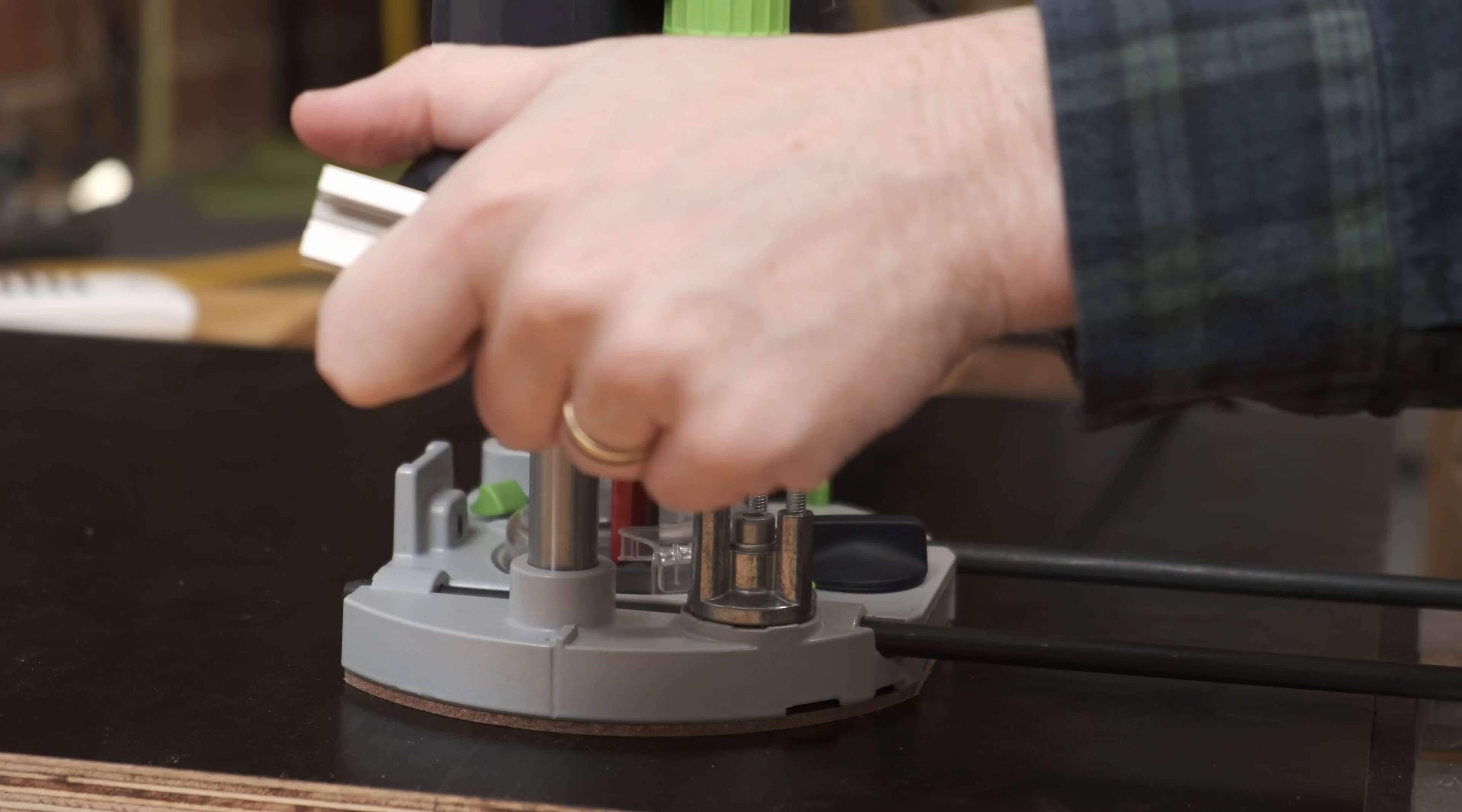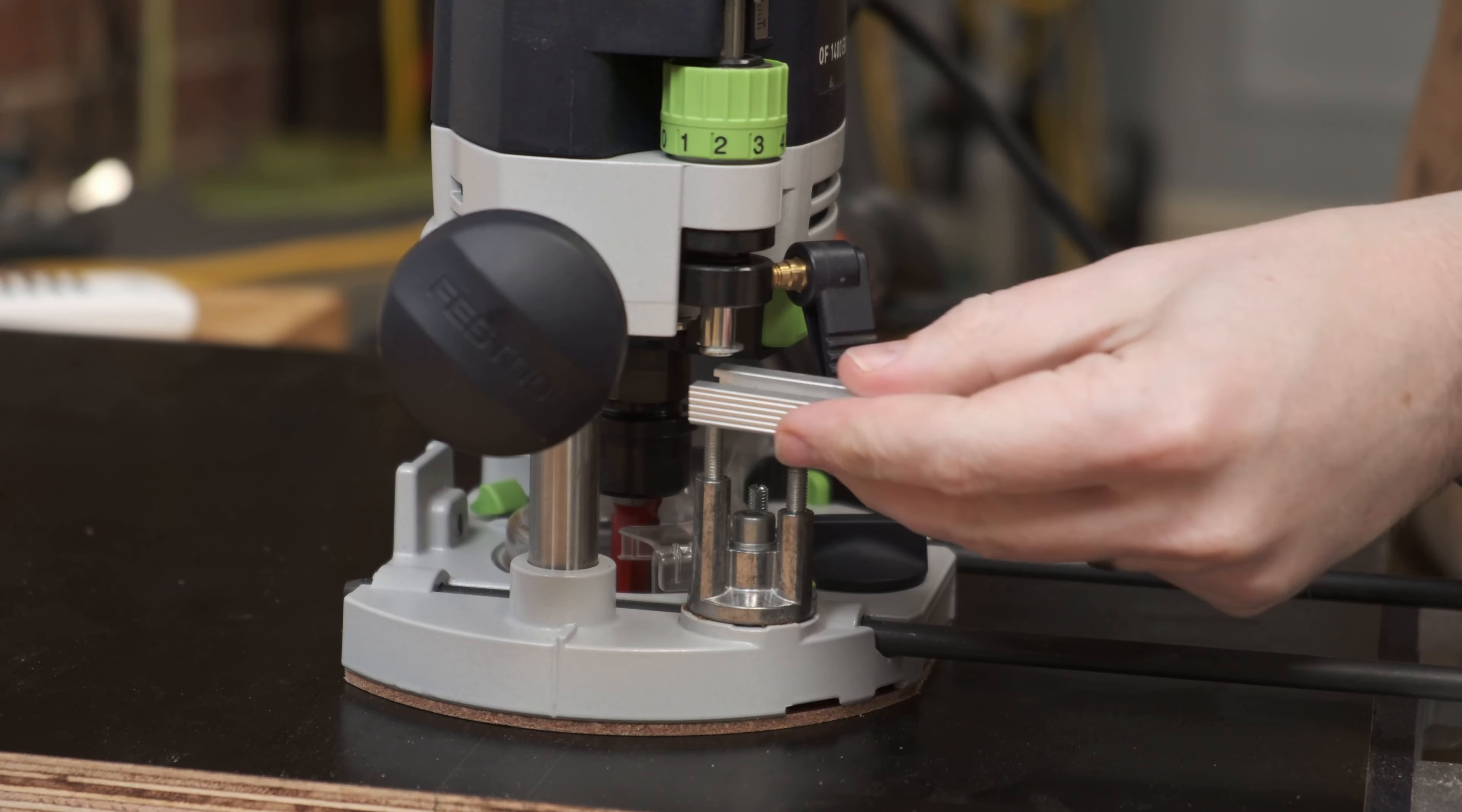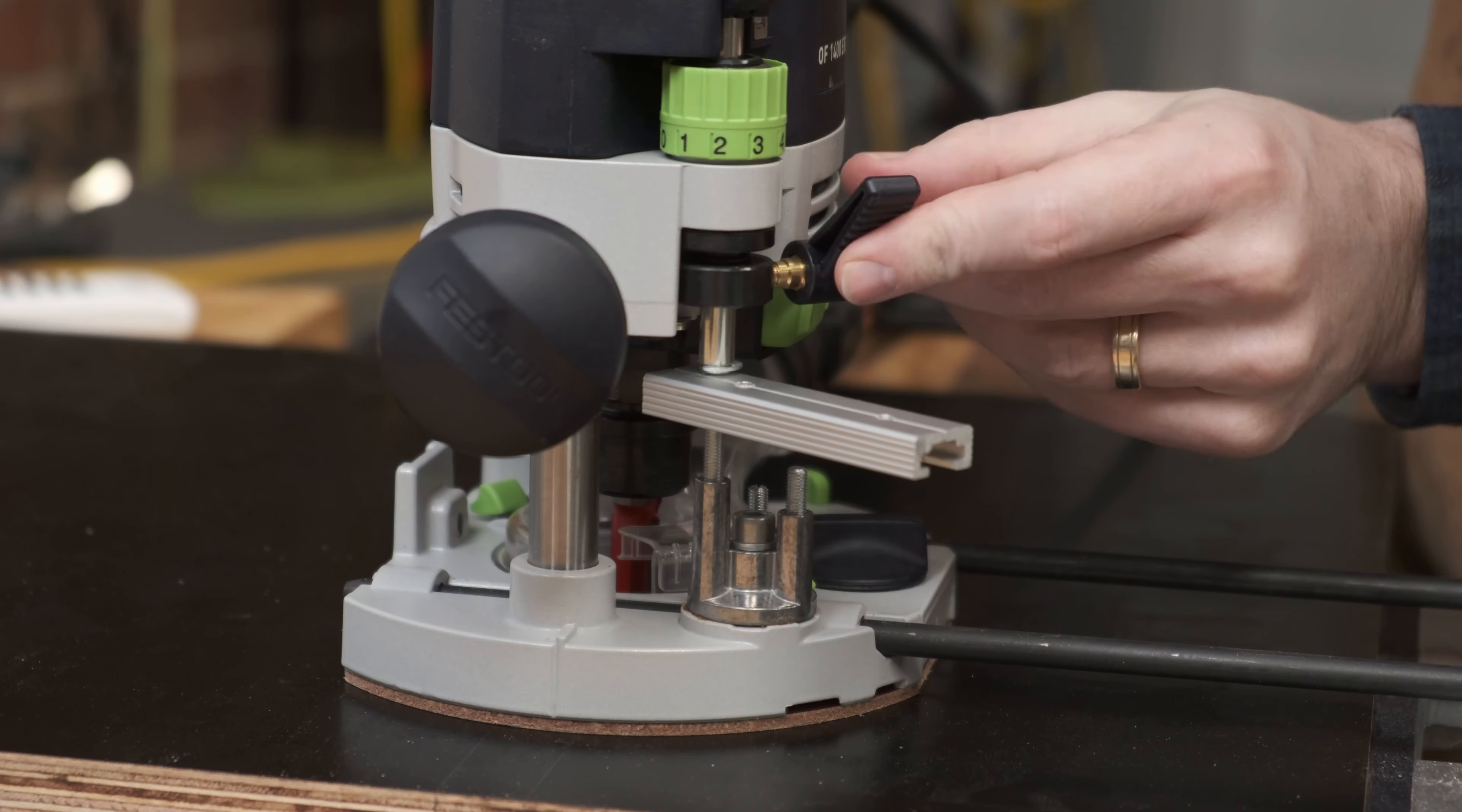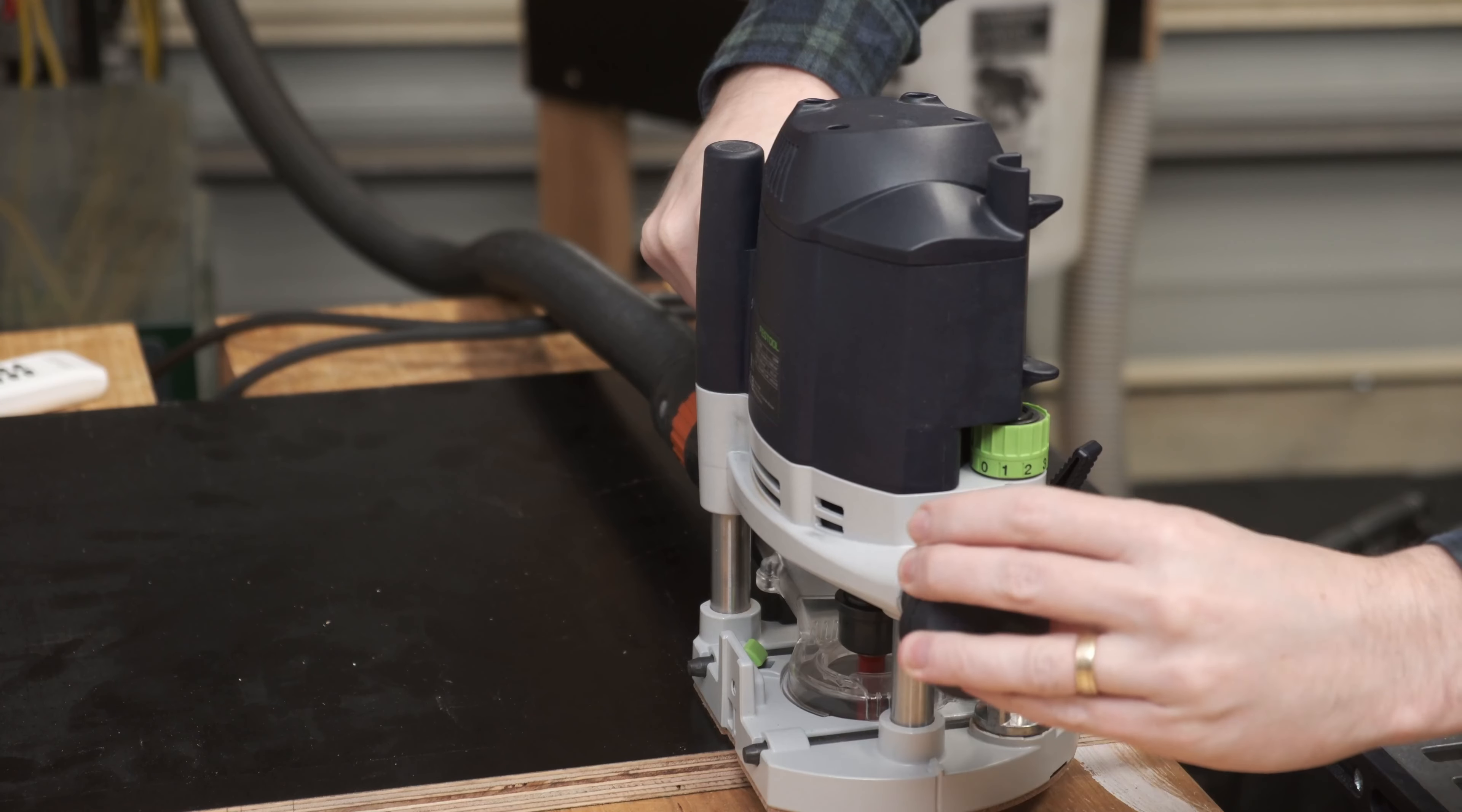All jokes aside, for precision using a router, both the depth stop and the width of the dado that we're cutting is not to measure twice cut once, but to measure no times and just reference off the material itself. In this case it's an offcut of the T-track which allows me to set it precisely to the T-track rather than trying to measure and replicate all those dimensions. It's just quicker and easier than finding out that this piece is 19.83 millimeters or something like that.